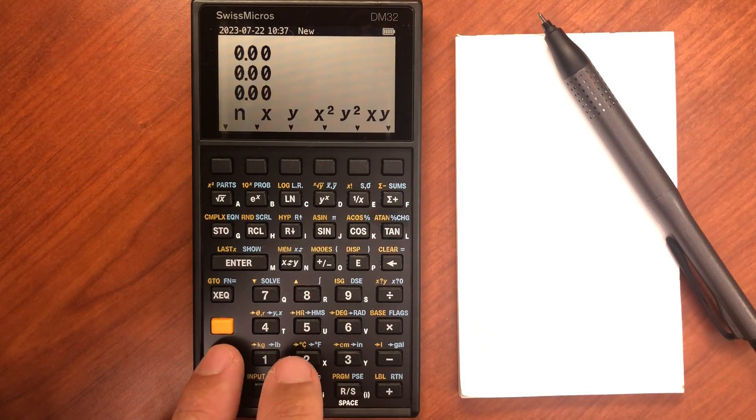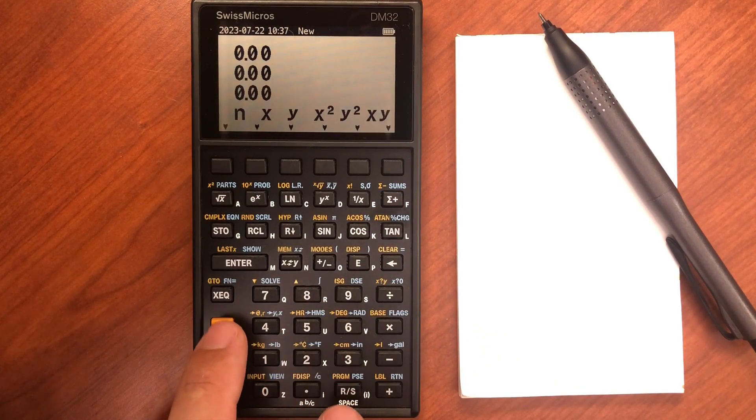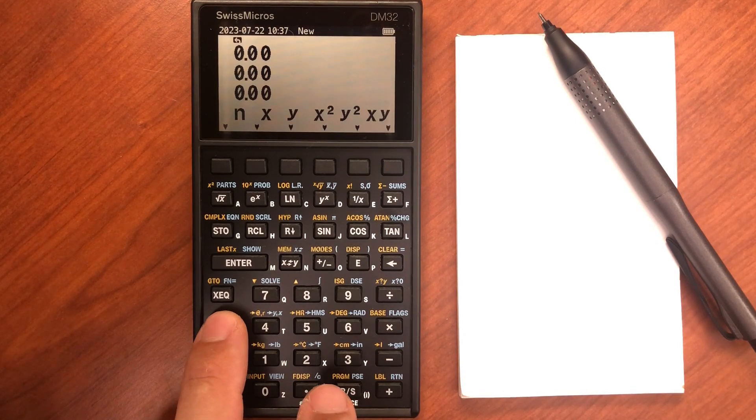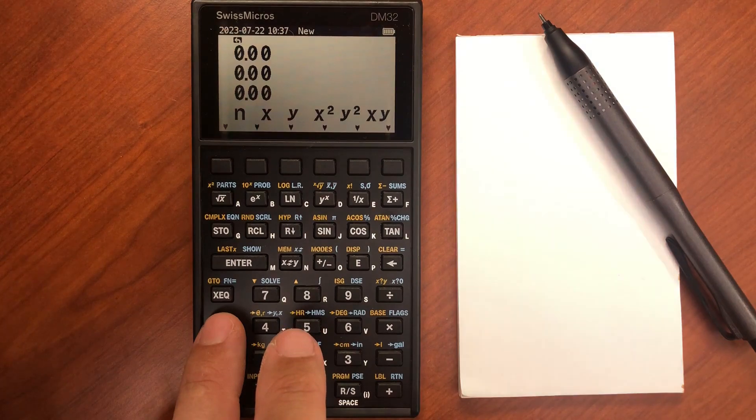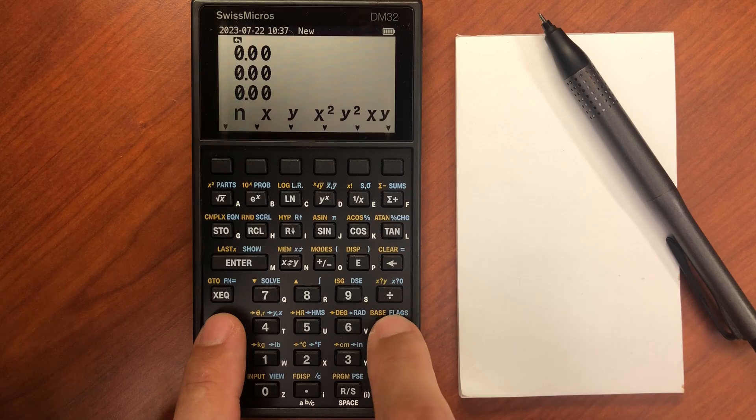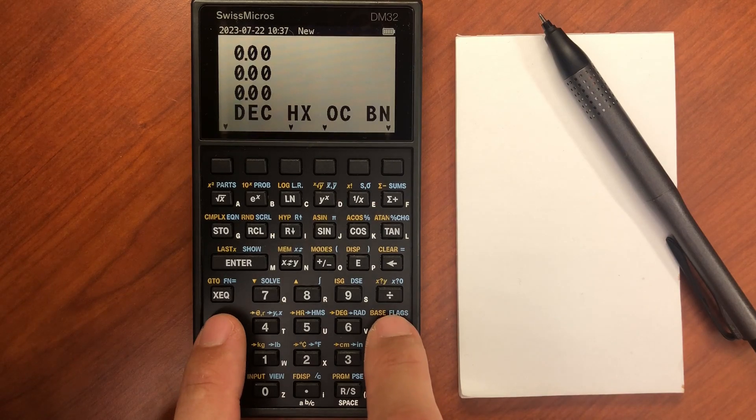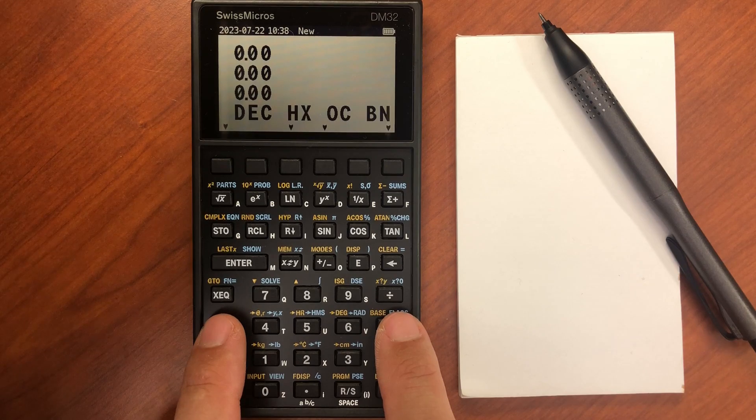And then if we go down here to the base menu, that's going to be yellow shift. So base, base, and this is where we can convert to different numerical bases. So from decimal to hexadecimal, octal, or binary, and vice versa.